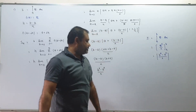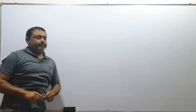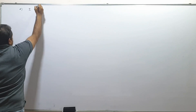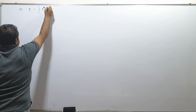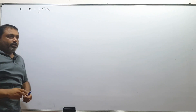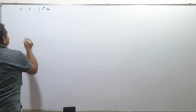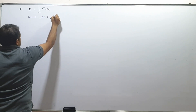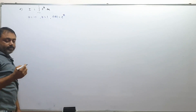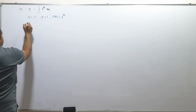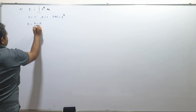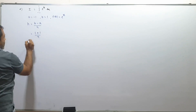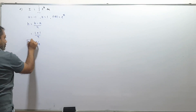Clear? Next example. Second example: I is equal to integral from minus 1 to 1 of eˣ dx. Now, a is equal to minus 1, b is equal to 1, so h equals (b minus a)/n equals (1 minus (minus 1))/n equals 2/n.